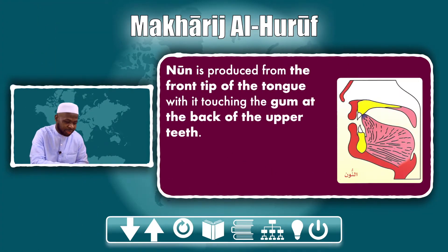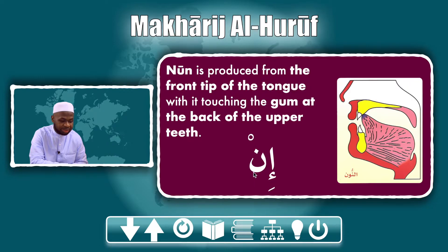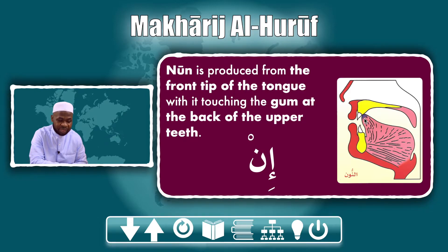Noon comes from the front tip of the tongue. We mentioned that lam comes from the front urge and engages the entire urge. Here we have the front tip of the tongue when it touches the gum at the back of the upper teeth. Take a look at this — you have a silent noon; apply any letter before it with active sound and you will be good to go. The front tip of your tongue should touch the back of the upper teeth — it doesn't have to touch the teeth itself, just the gum at the back. Unlike lam, where you stretch the front edge bigger, in the case of noon you only use the tip.